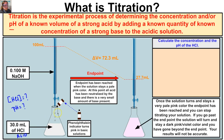We take a strong base like sodium hydroxide and figure out its concentration ahead of time. We're using 0.100 molar sodium hydroxide, and we're going to put some of this in the burette. We fill it up to an arbitrary amount and measure how much we added — approximately 100 milliliters of sodium hydroxide solution — to the burette.